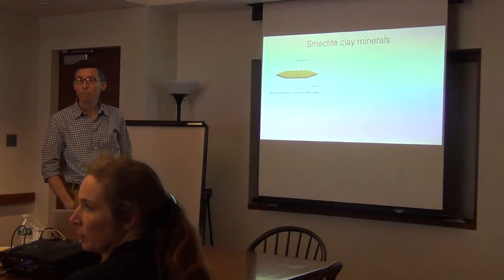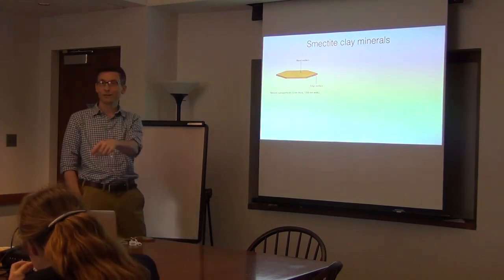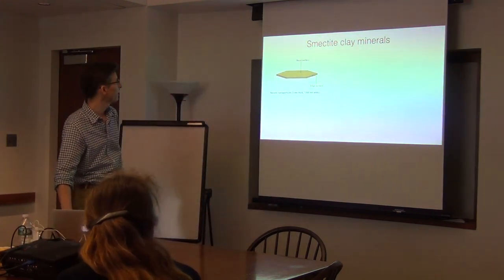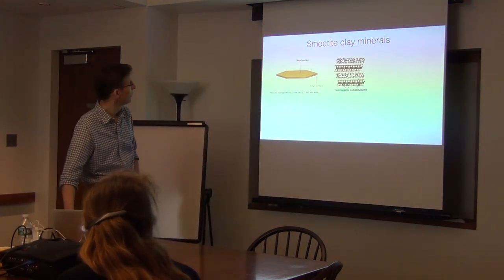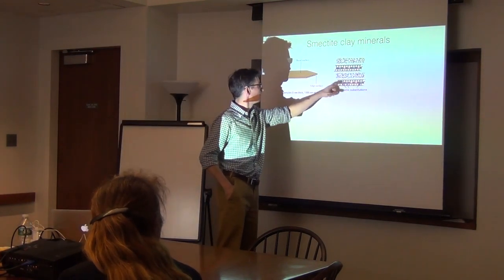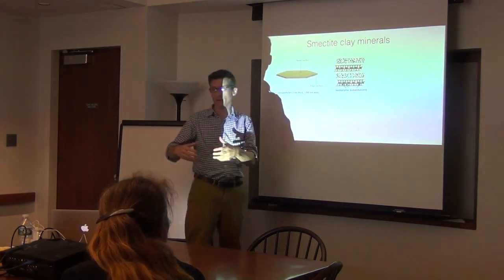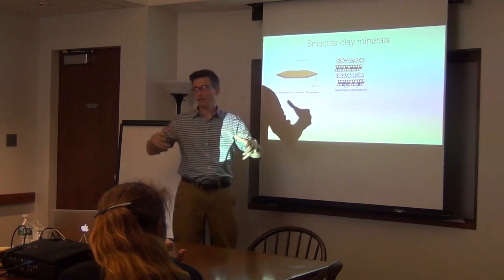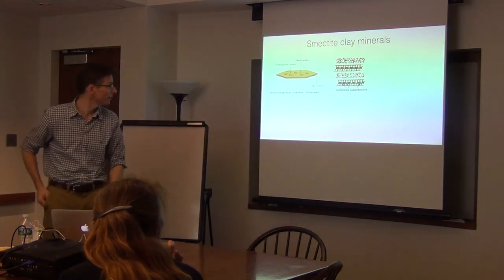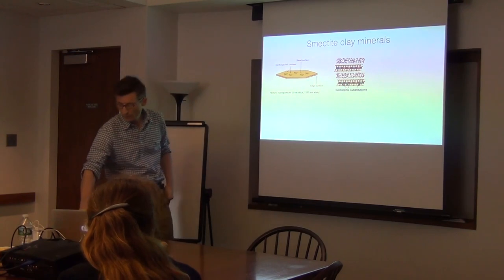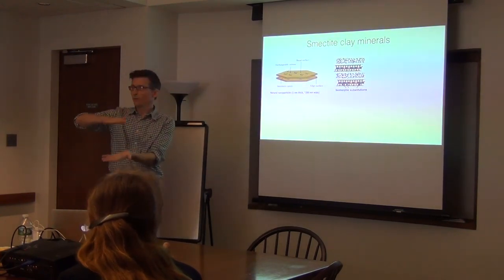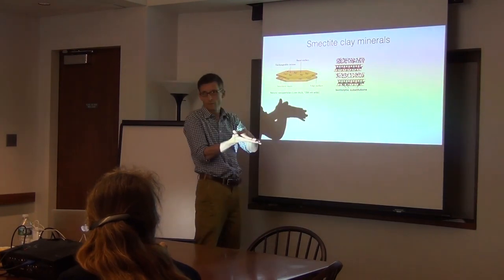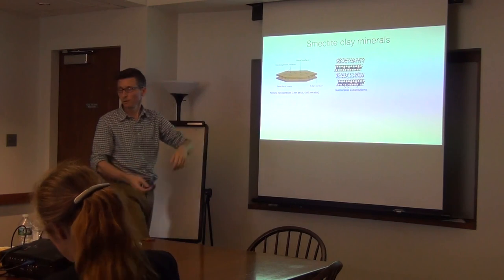Smectites have a high surface area, mostly on the basal surface — about 99% — and maybe 1% on the edge surface. They have structural defects that give this crystalline structure a negative charge, and because of that, they have a high cation exchange capacity. There are exchangeable cations near the surface to charge-balance it. Because of their high aspect ratio, they tend to form stacks, and because of the hydration energy of these cations, the stacks have a hard time completely dehydrating, so you get interesting swelling mechanics.